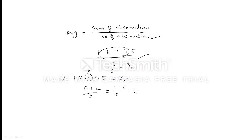In exams we can directly tell the correct average just by looking at the question. But this is not applicable for all questions — it is applicable only when the given series is in consecutive order. We need to be very careful: we can't consider the middle number as average for all numbers, only for consecutive sets.